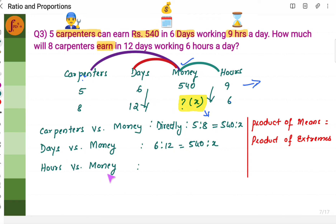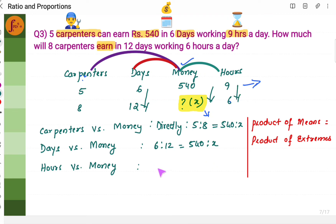For hours versus money: working 9 hours a day you earn 540 rupees. Working 6 hours a day you will earn less. The more you work, the more money you get, so it is also directly proportional. We write: 9 is to 6 is equal to 540 is to x.